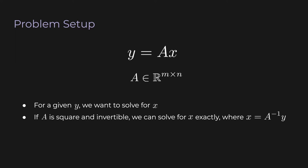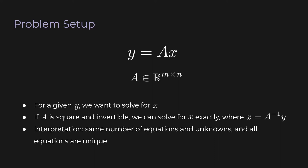We already know that if A is square and invertible we can solve for x exactly just by taking the inverse, where x equals A inverse times y. In plain English we can interpret this this way. If A is square and invertible this means that we have the same number of equations and unknowns and all the equations are unique. But here's the thing.